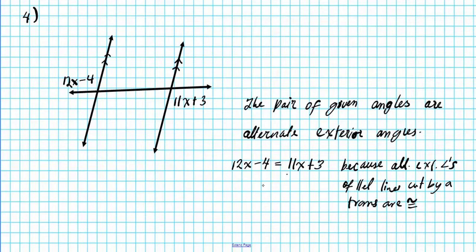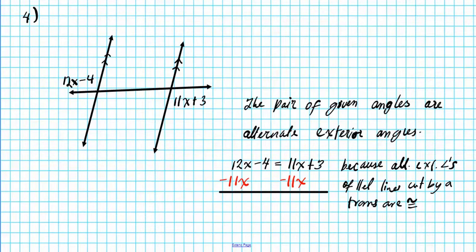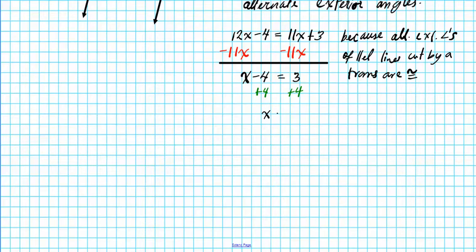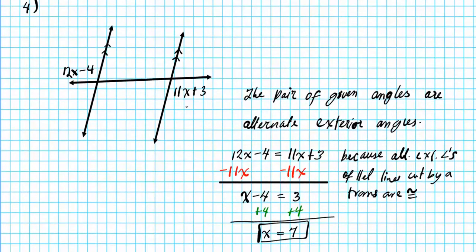Since these two angles are congruent, we can write down the equation 12x minus 4 equals 11x plus 3, because alternate exterior angles of parallel lines cut by a transversal are congruent. Now let's solve this equation with variables on both sides for x. I will subtract 11x from both sides of the equation, and that yields 12 minus 11 is x minus 4 equals 3. Then to finish this off, we simply add 4 to both sides. Our final answer is x equals 7.